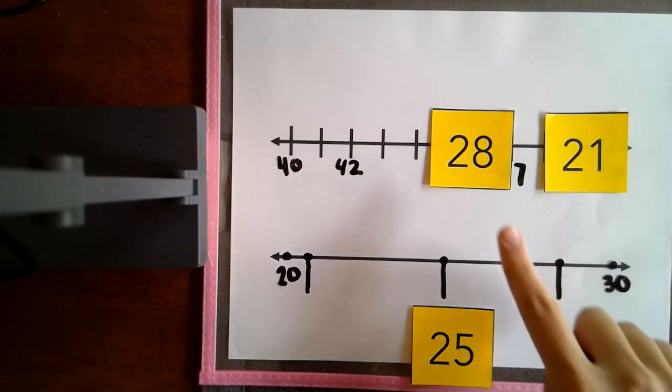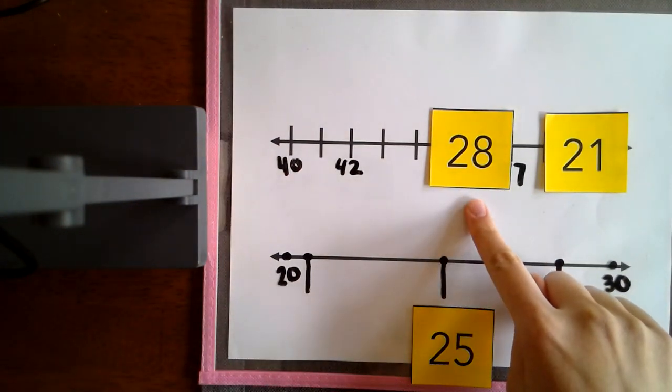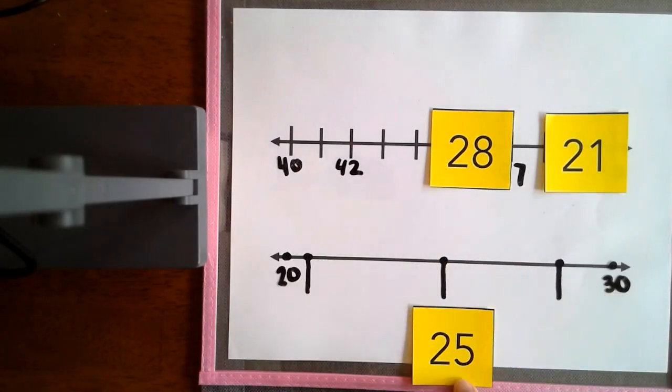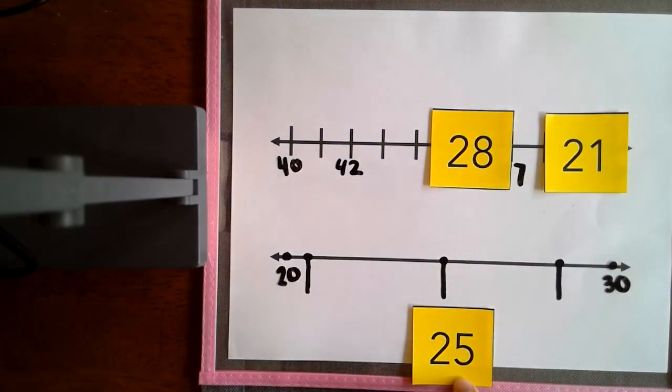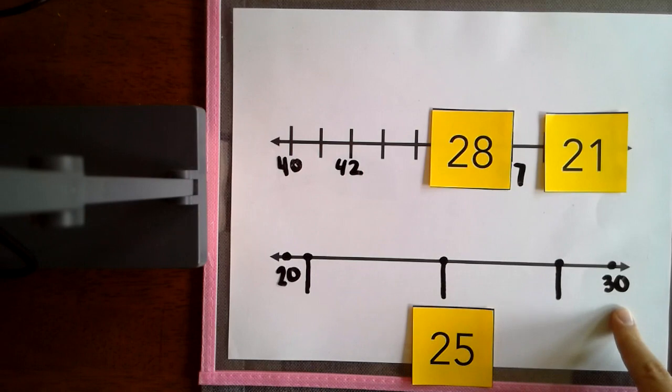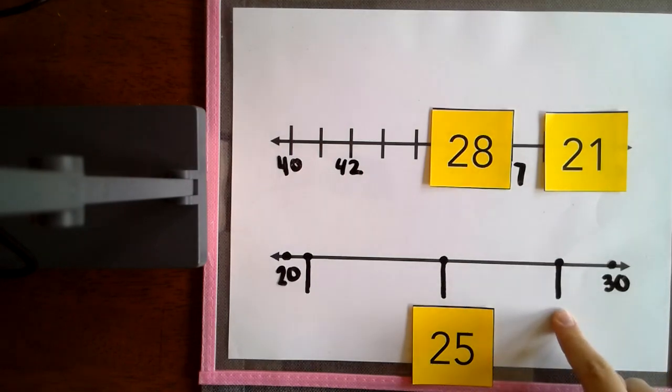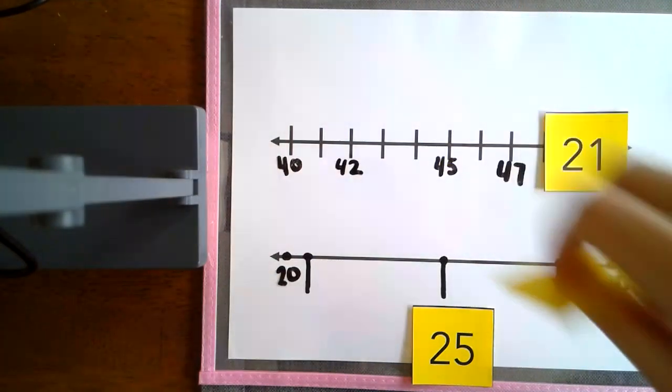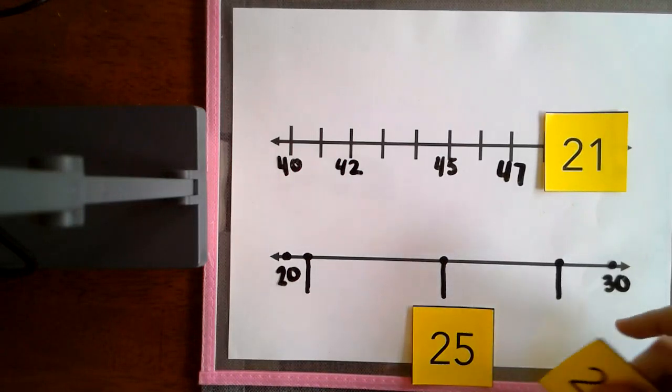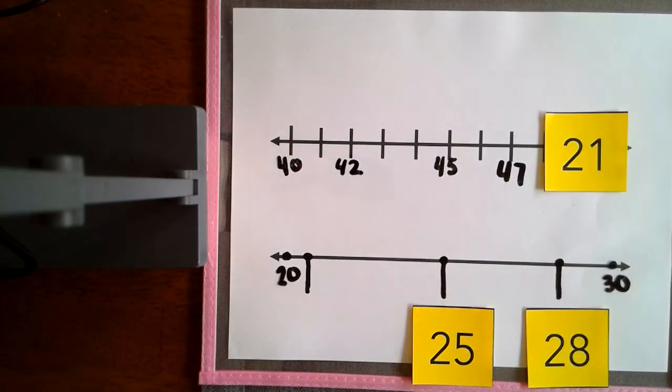Now we have 28. Well, I know that 28 is greater than 25, so it should be closer to 30. I have a spot right there that is greater than 25 and close to 30. That's where 28 would go.